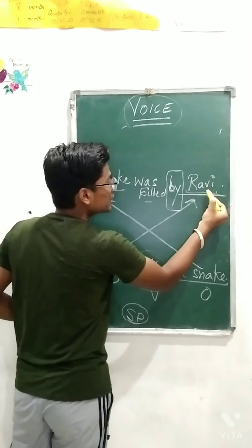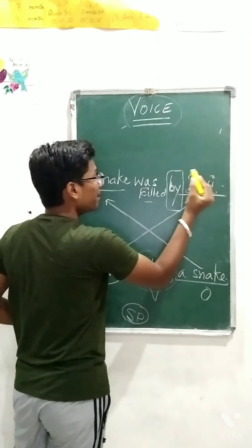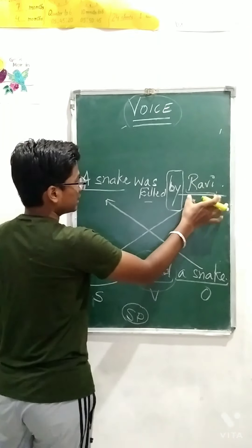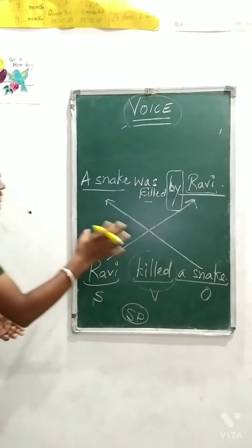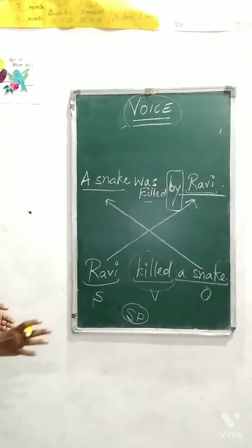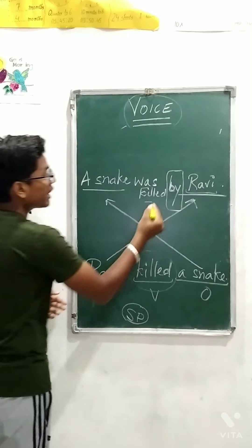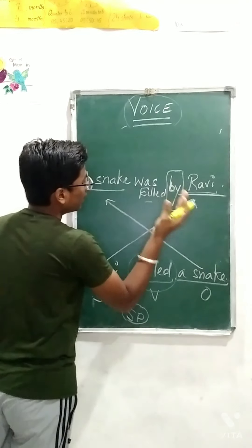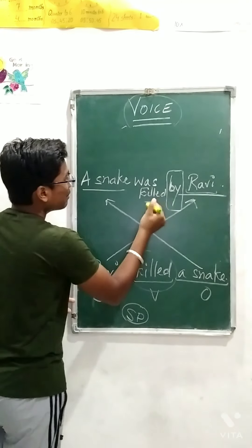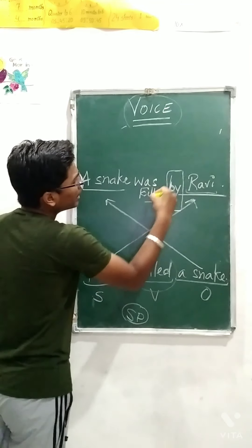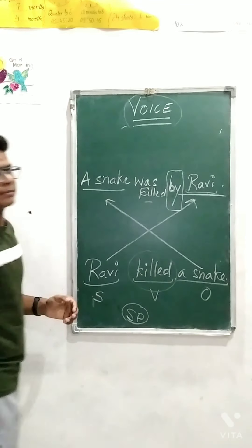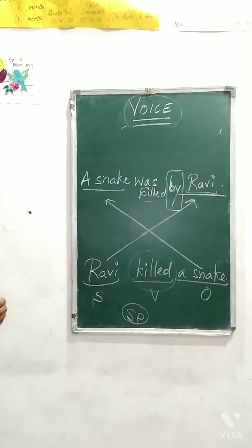'By' always comes before the object in passive voice — or you can also remember it as: 'by' comes after the verb. So 'by' will always appear after the verb and before the object.